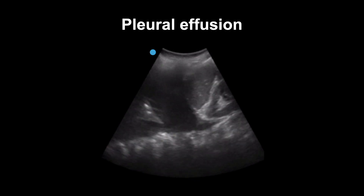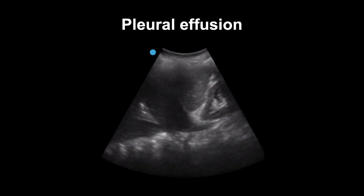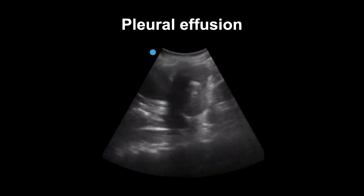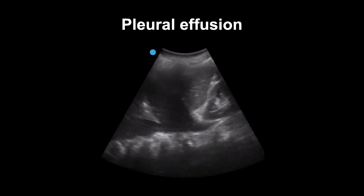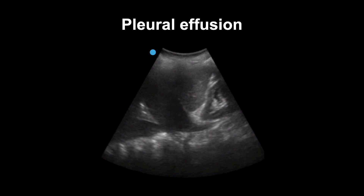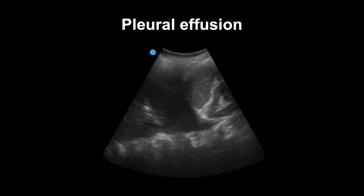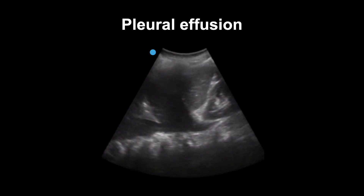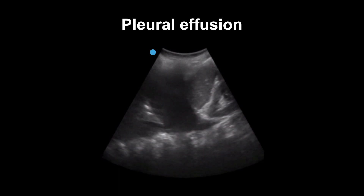Large pleural effusions are not typical of COVID-19. If you find one — which would appear on ultrasound as an anechoic space above the diaphragm with a spine sign, as we see here — consider another diagnosis.